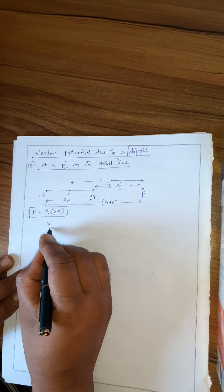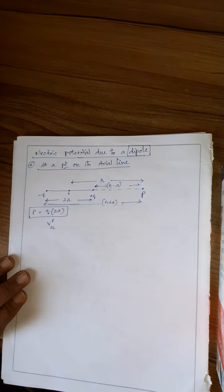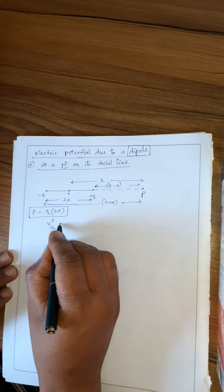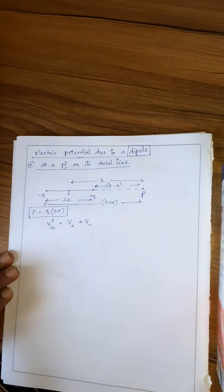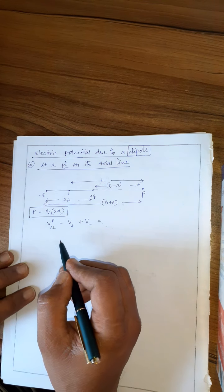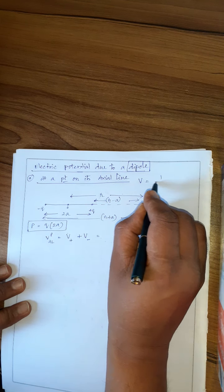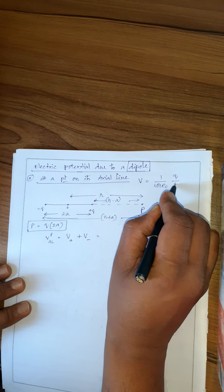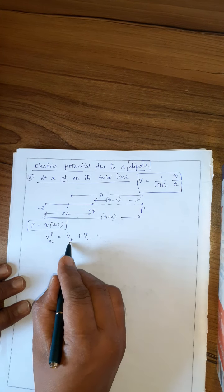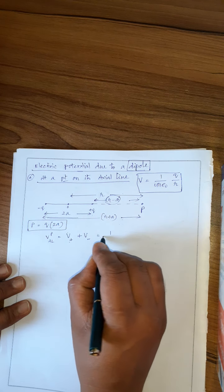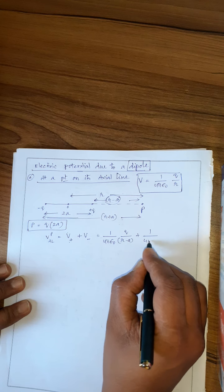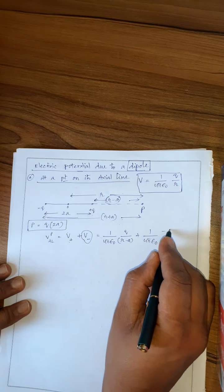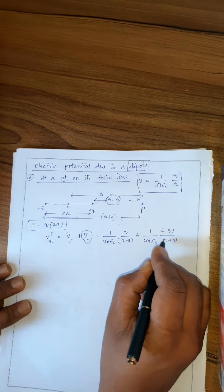Potential is a scalar. So potential along the axial line at point P is equal to potential due to positive charge plus potential due to negative charge — no vector notation because potential is a scalar. The expression for potential due to a point charge is 1 upon 4πε₀ times q by distance. So potential due to positive charge is 1 upon 4πε₀ times q by (r minus a), and potential due to negative charge is 1 upon 4πε₀ times minus q by (r plus a).